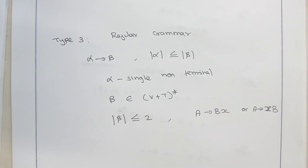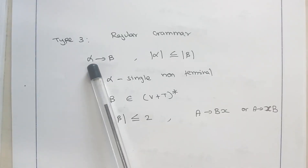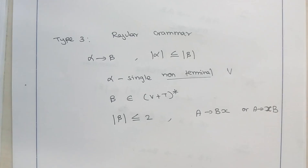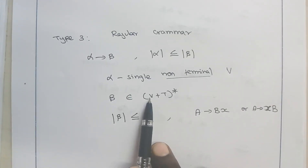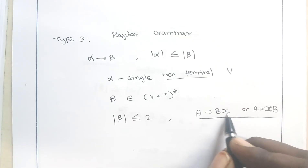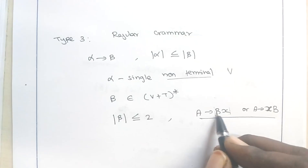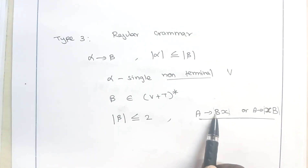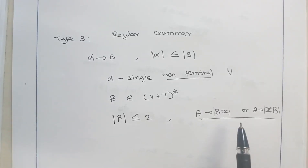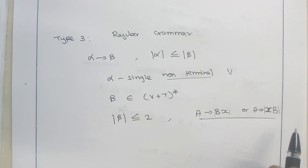The last type of grammar is called a regular grammar. Regular grammar has some additional restriction compared to context free grammar. The production is again of the form alpha tends to beta, and the length of alpha is less than or equal to length of beta. Alpha is a single non-terminal or single variable. Beta might be a variable or a combination of variable and terminal to the power star. But here the restriction on beta is that the length of beta is always less than or equal to 2, and whenever it is 2, it should have the combination of a variable and a terminal. This type of grammar is called a linear grammar. When the variable is on the left hand side, we call it a left linear grammar; on the right hand side, we call it a right linear grammar. The production is always of this form or a variable tends to a single terminal symbol, which is also accepted.